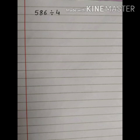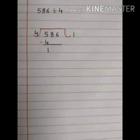Now we can see that 586 is the dividend and 4 is the divisor. In this division sum, we can see that the leftmost digit of dividend is 5 and divisor is 4.